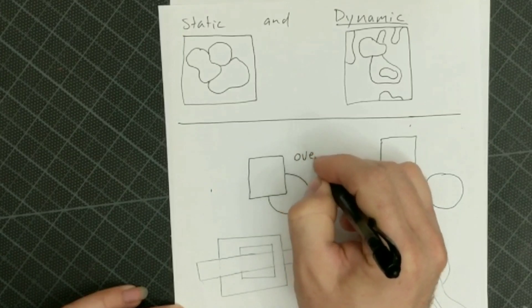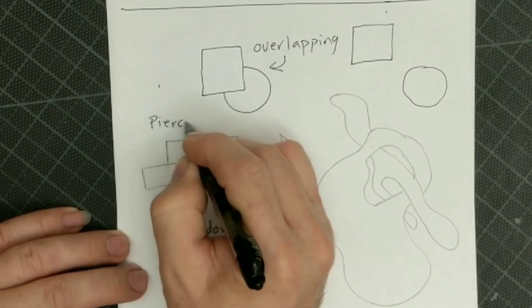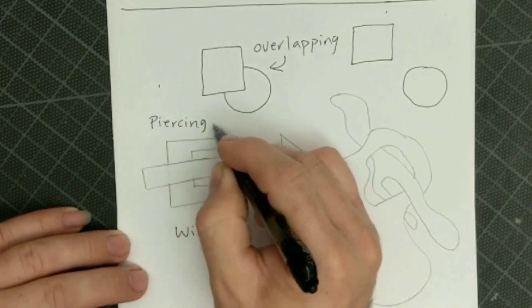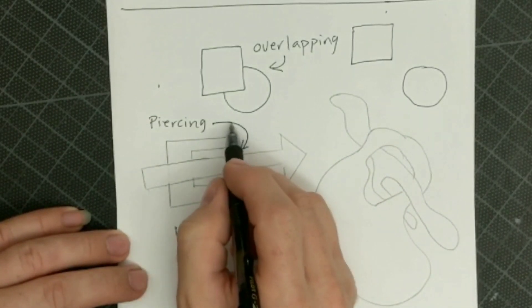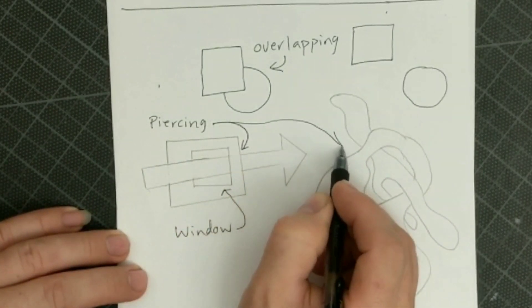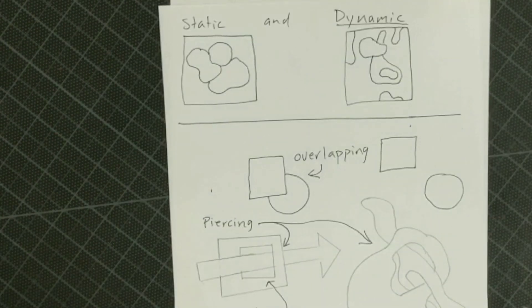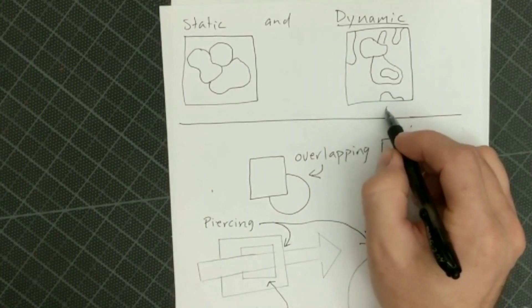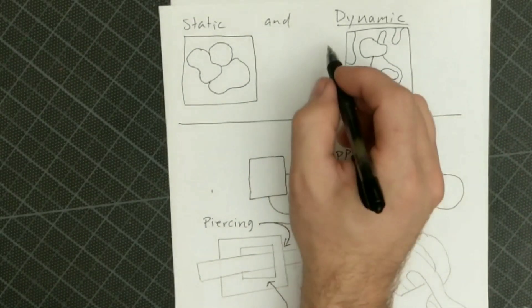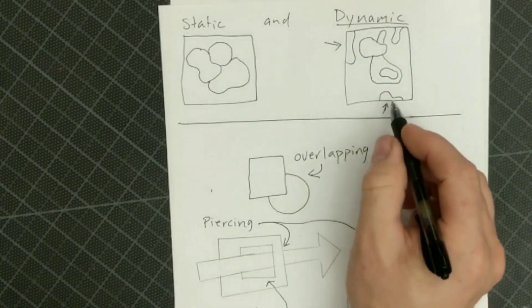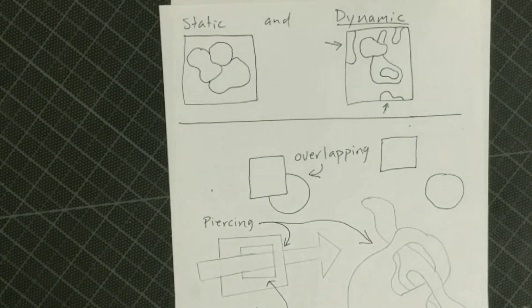That's static versus dynamic. So we have overlapping, a window, and we have piercing, which is this arrow going through this shape. And this shape going through that shape. Don't forget pieces leaving the format of your picture, going on and off, falling into the page and falling off of the page. Creates a more dynamic composition.